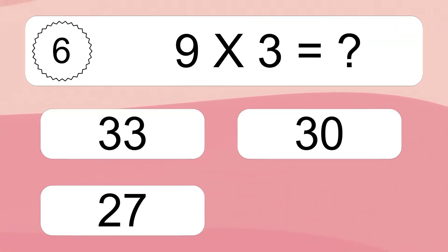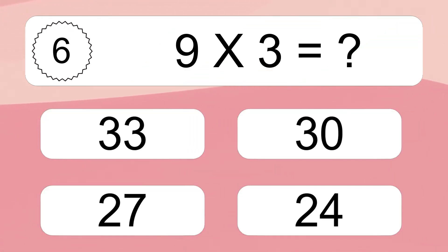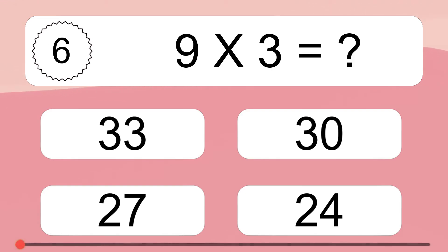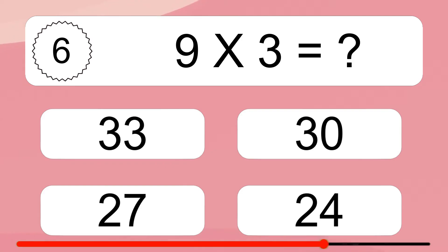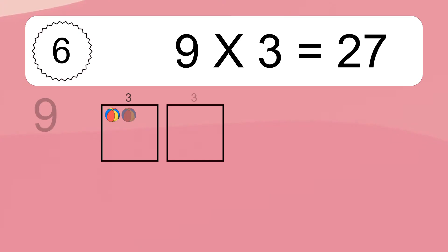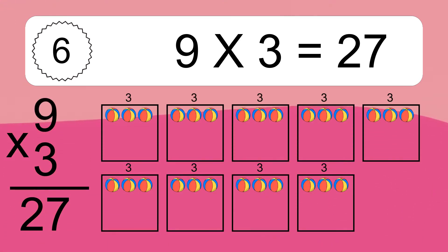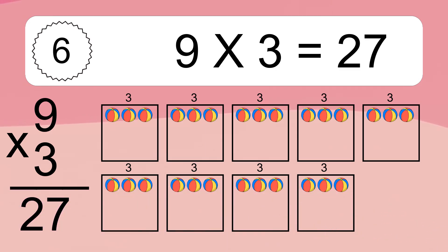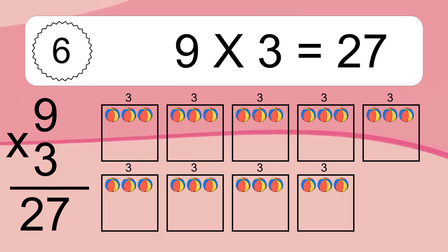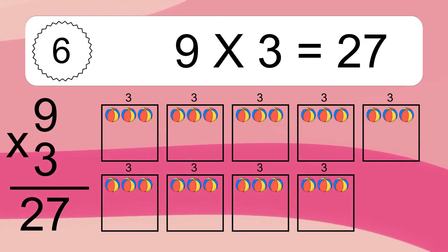9 times 3 equals what? 9 times 3 equals 27. We have 9 boxes, and each box has 3 colorful balls inside. If you count all the balls in all the boxes together, you will have 9 times 3 balls. This equals 27 balls.